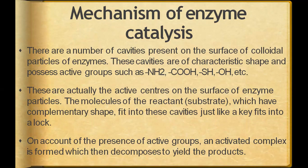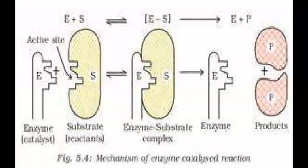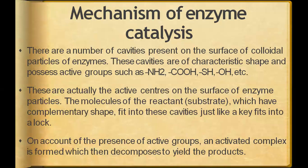These enzymes have a specific cavity which is the active site. This is the active site of the enzyme, and the substrate has a complementary active site similar in shape, into which this key can fit easily. When these two active sites combine together, the reaction actually takes place. On account of the presence of the active groups, an activated complex is formed which then decomposes to yield the product.